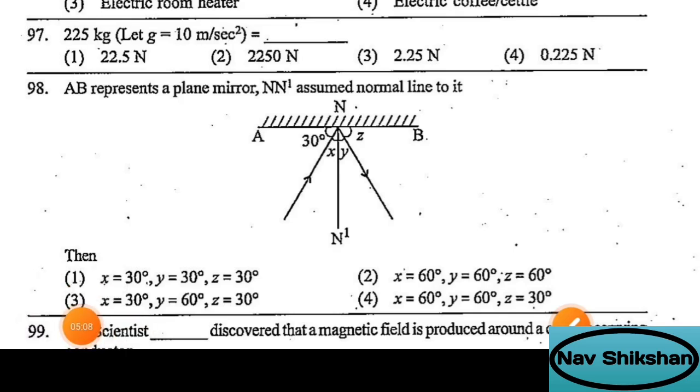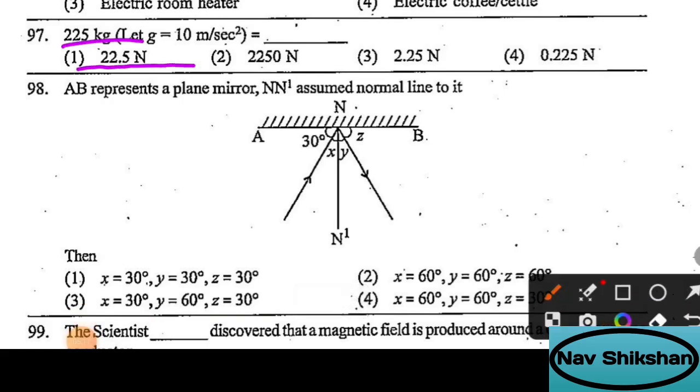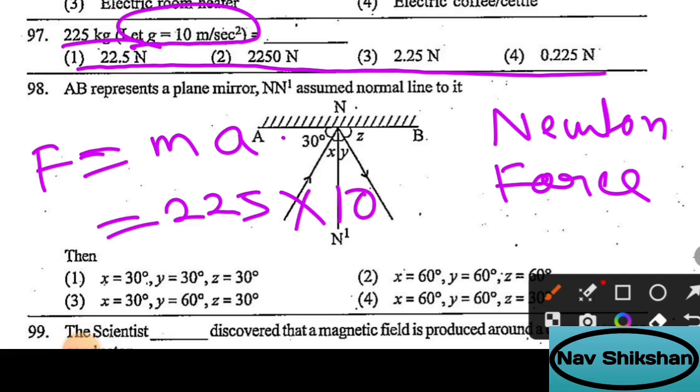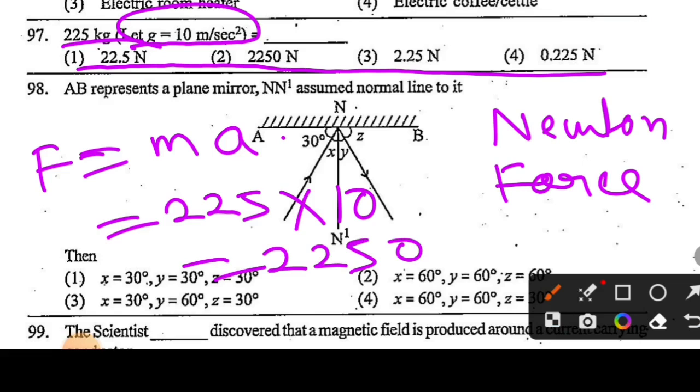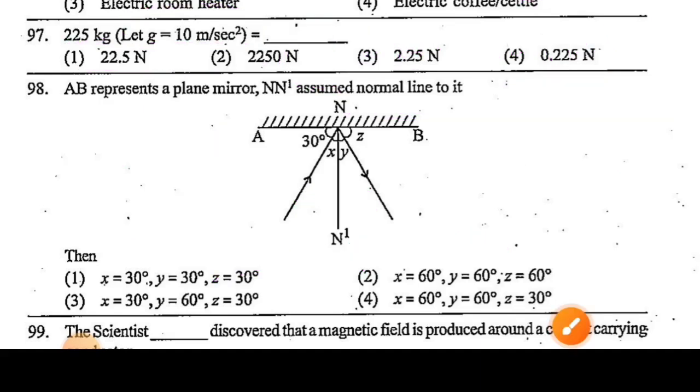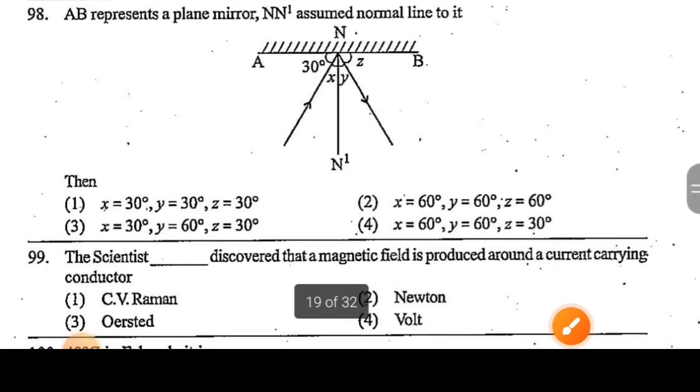Question 97: if we have to convert 225 kg to Newton, here the formula of force - Newton is the unit of force. Force equals mass into acceleration. Here the mass given is 225 and the acceleration due to gravity is 10 meter per second square. Multiply: 2250 Newton. Remember, 1 Newton equals kg meter per second square. Sometimes questions come for dimensions, converting kilogram or second into different units. Option number 2 is correct.